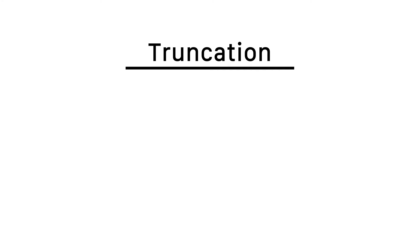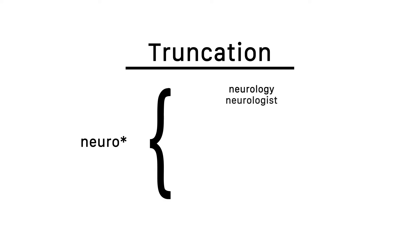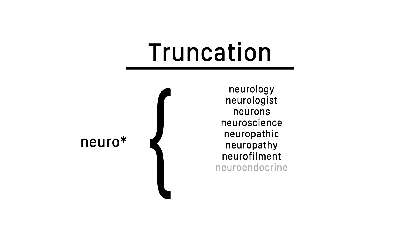Another important operator is the truncation operator. You can use this when you want to search a term that has multiple possible endings, instead of including each form of the term individually. With most databases, it's important to include as much of the search term as you can, and only exclude the portion that may change. If you truncate too early, you may get a search that accidentally includes unrelated terms that happen to start the same way.